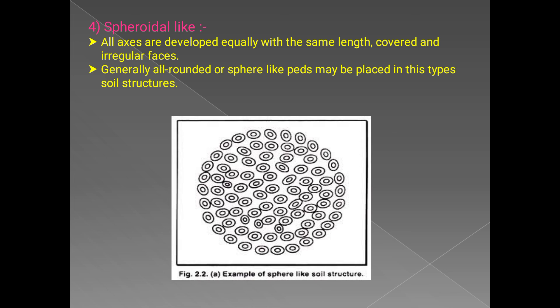Within the spheroidal type, there are two sub-types based on size: granular and crumby. In granular structure, the particle size is large, similar to sand particles; pore space is more but aeration is low. In crumby structure, particle size is very small, like clay particles; pore space is low but aeration is very high.